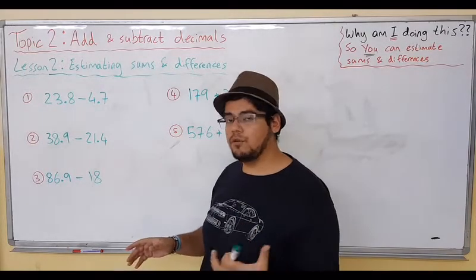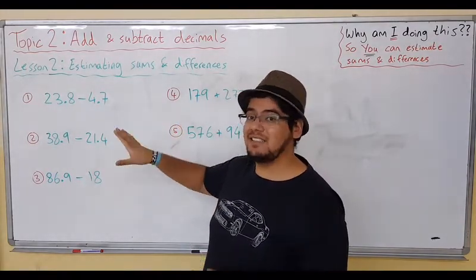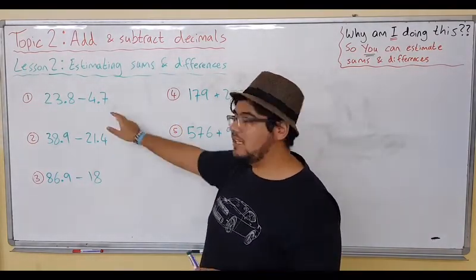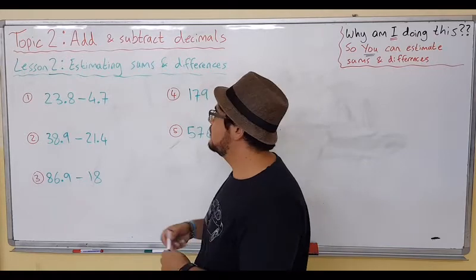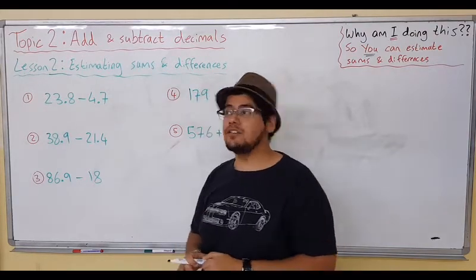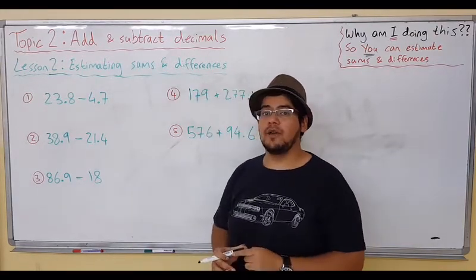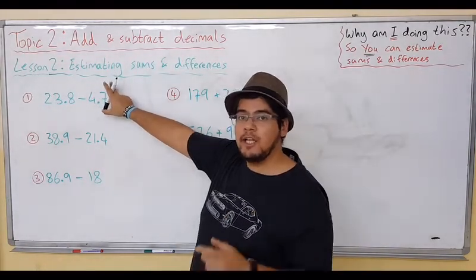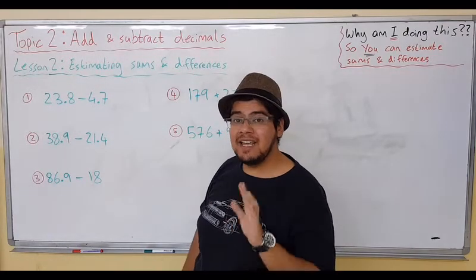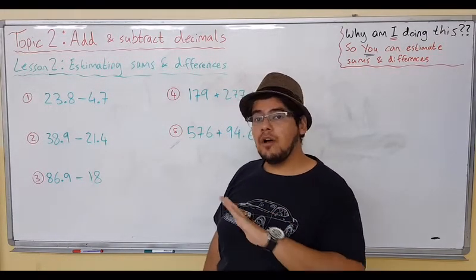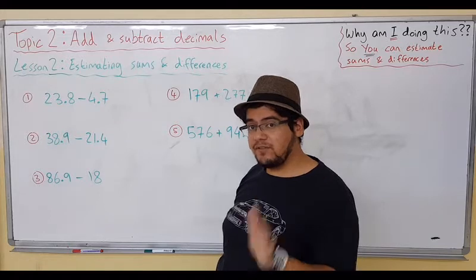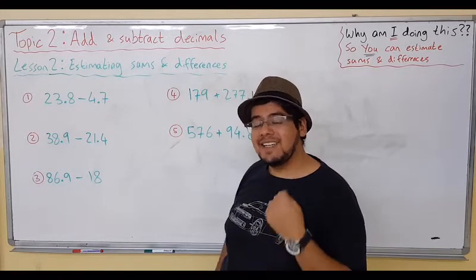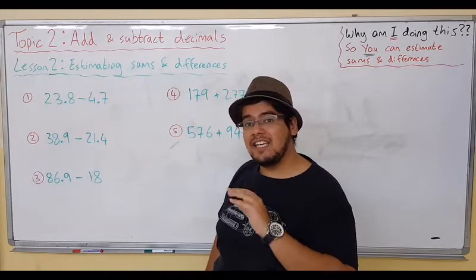Let's take a look at the first problem: 23.8 subtract 4.7. When we estimate, we do not want decimals in the answer—we want a whole number only. That's the first very important point. Estimation is just the need for a whole number only.